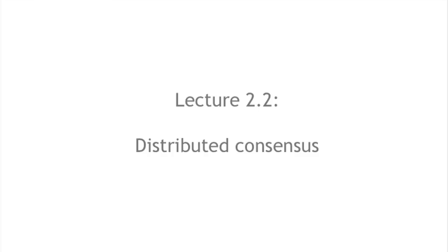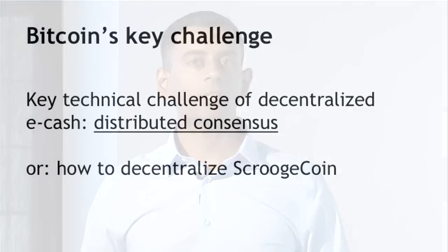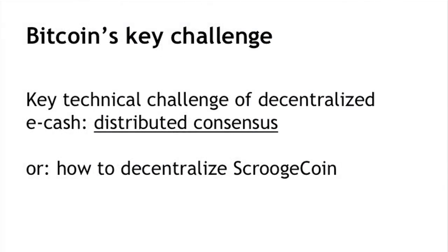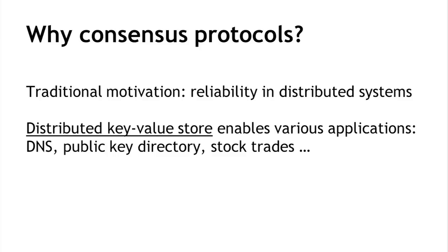Now let's talk at a more technical level about Bitcoin and decentralization. A key word that's going to come up again and again is consensus — specifically distributed consensus. At a technical level, the key challenge you have to solve to build a distributed e-cash system is called distributed consensus. This is a class of protocols that's been studied for decades in the computer science literature. Intuitively, you can think of it as our goal being to decentralize Scroogecoin, the hypothetical currency we saw in the first lecture.